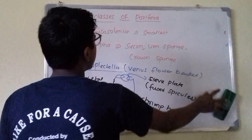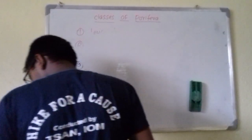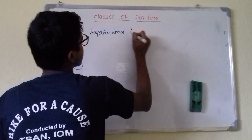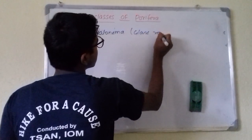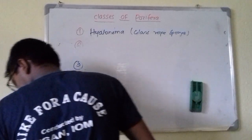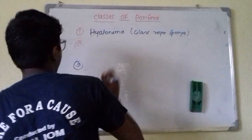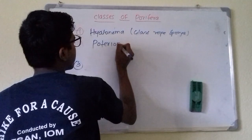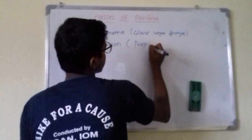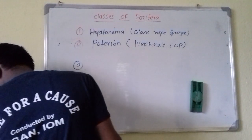So that is about Euplectella. The fourth one is Hyalonema, known as the glass rope sponge. Fifth is Poterion, known as Neptune's cup.